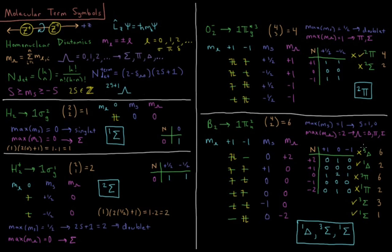Arranging the possibilities in descending order from triplet to singlet and from delta to sigma: there is no triplet delta, as there is no case where m sub s equals 1 and m sub lambda equals 2. For a singlet delta, we need m sub lambda equals plus or minus 2 and m sub s equals 0 — those two determinants exist, so there is a singlet delta. Once subtracted out, there is no singlet delta remaining.